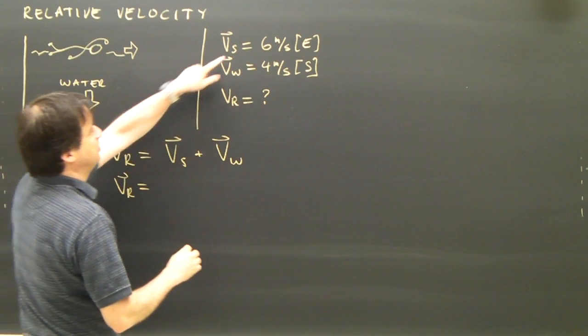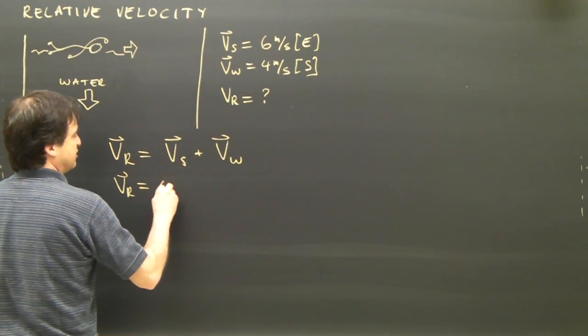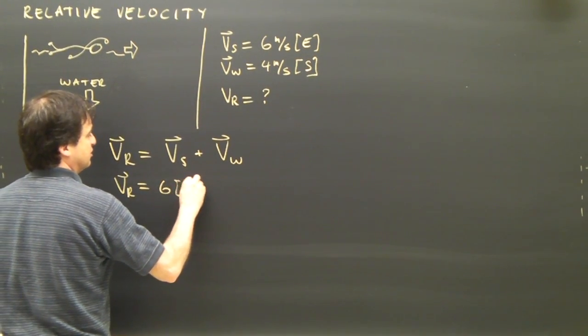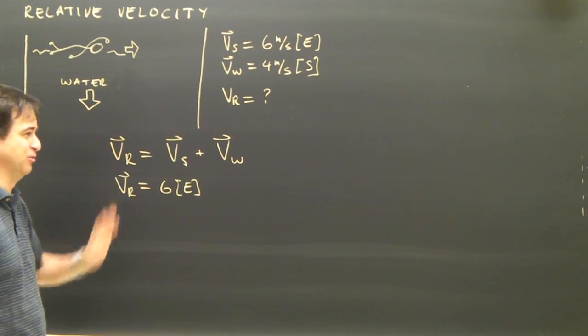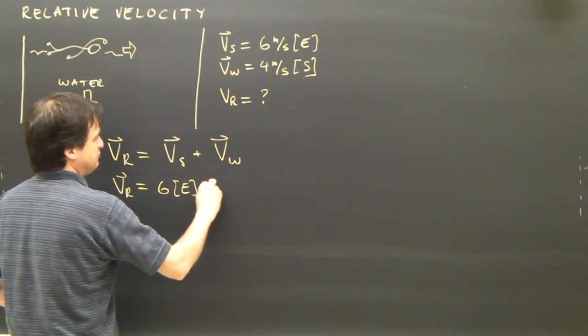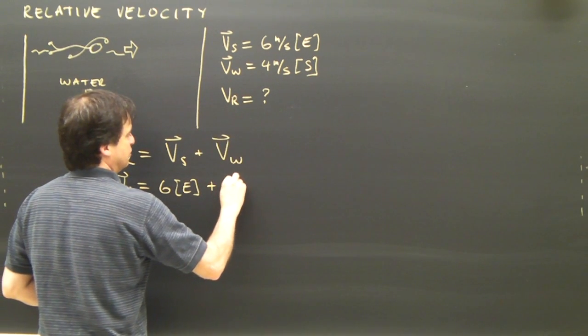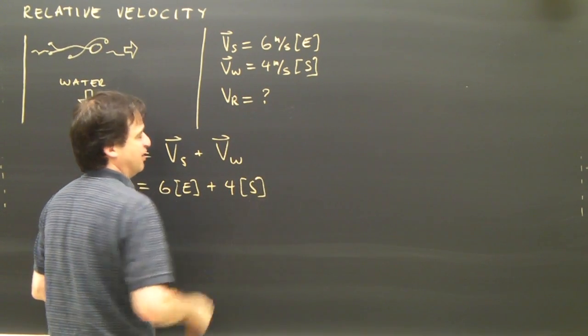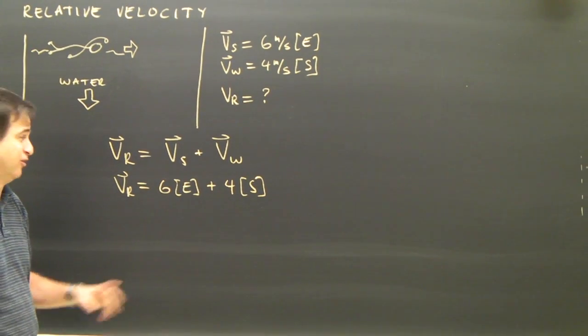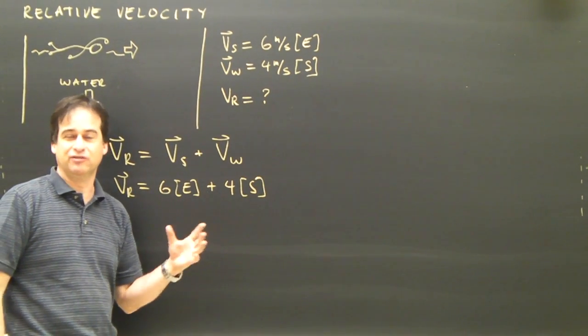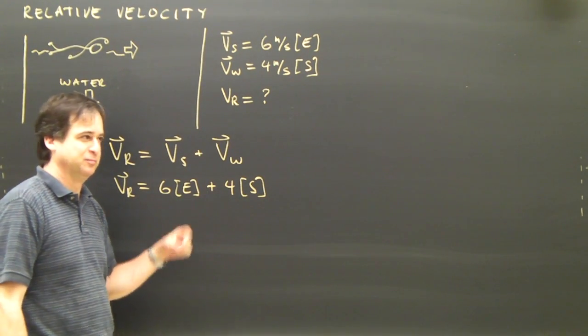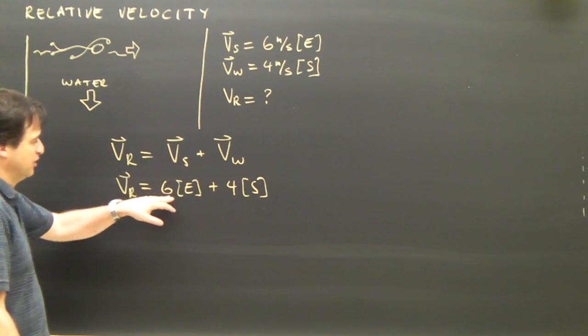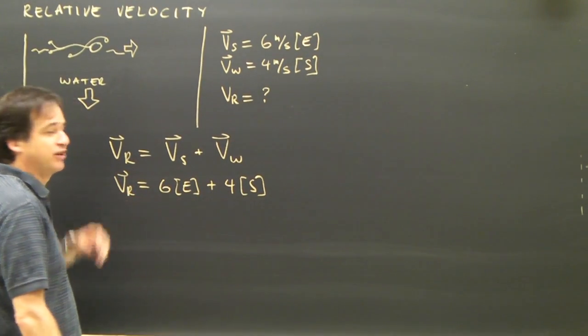So let's take a look. The result is the swimmer. The swimmer is 6 meters per second east. I'm going to drop the units so we don't get bogged down with things we don't need at this point. And the water, 4 south. Well, this is going to be a simple right angle triangle. If it was more complex, you have to look at the videos on adding vectors.